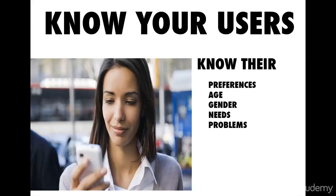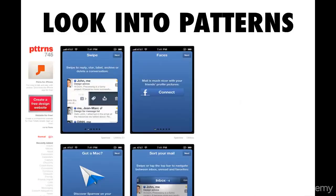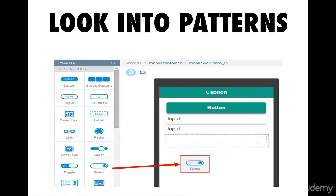Pay attention to patterns — users spend the majority of their time on interfaces other than your own, such as Facebook, MySpace, blogs, bank websites, schools, universities, news websites, or social media like Instagram and Tumblr. There is no need to reinvent the wheel. Those interfaces may solve some of the same problems users perceive. By using familiar UI patterns, you can help your users feel at home.